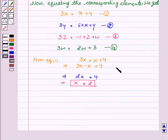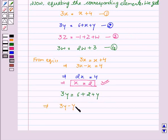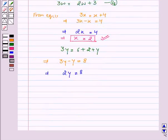Now on substituting the value x equal to 2 in equation 2, we get 3y equal to 6 plus 2 plus y. This implies 3y minus y equal to 8, so 2y equal to 8. Therefore, y equal to 4.